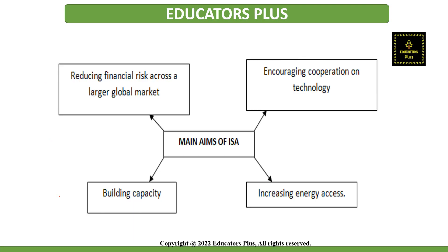The main aims of the ISA are: first, to reduce financial risk across a larger global market; second, to encourage cooperation on technology; third, increasing energy access; and fourth, building capacity.